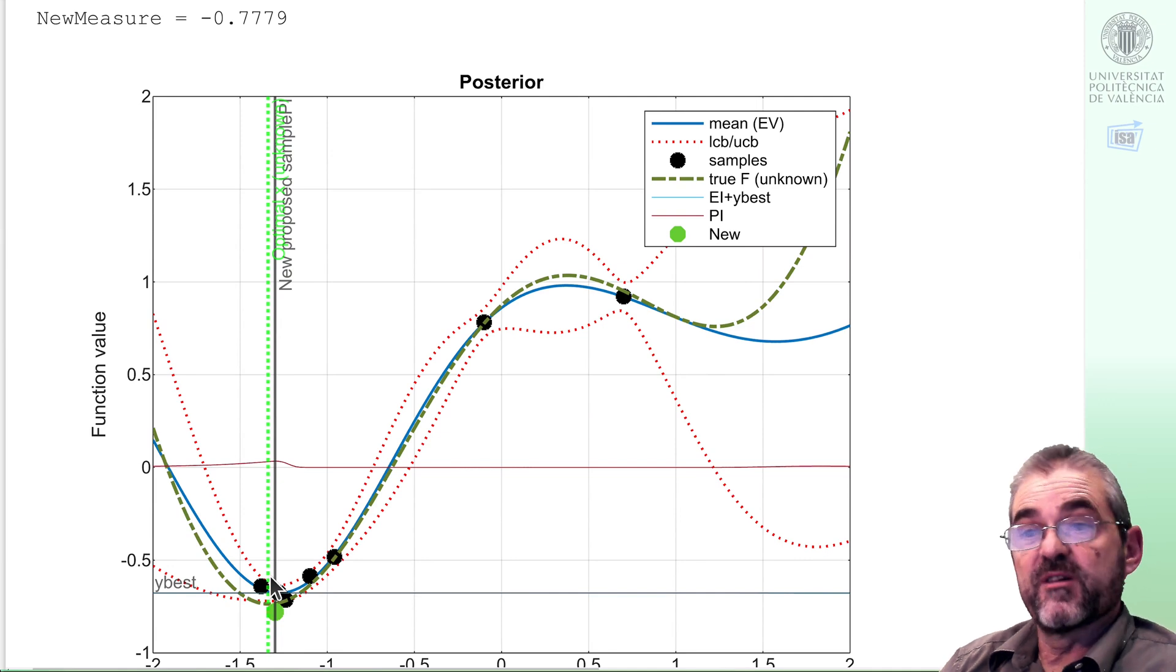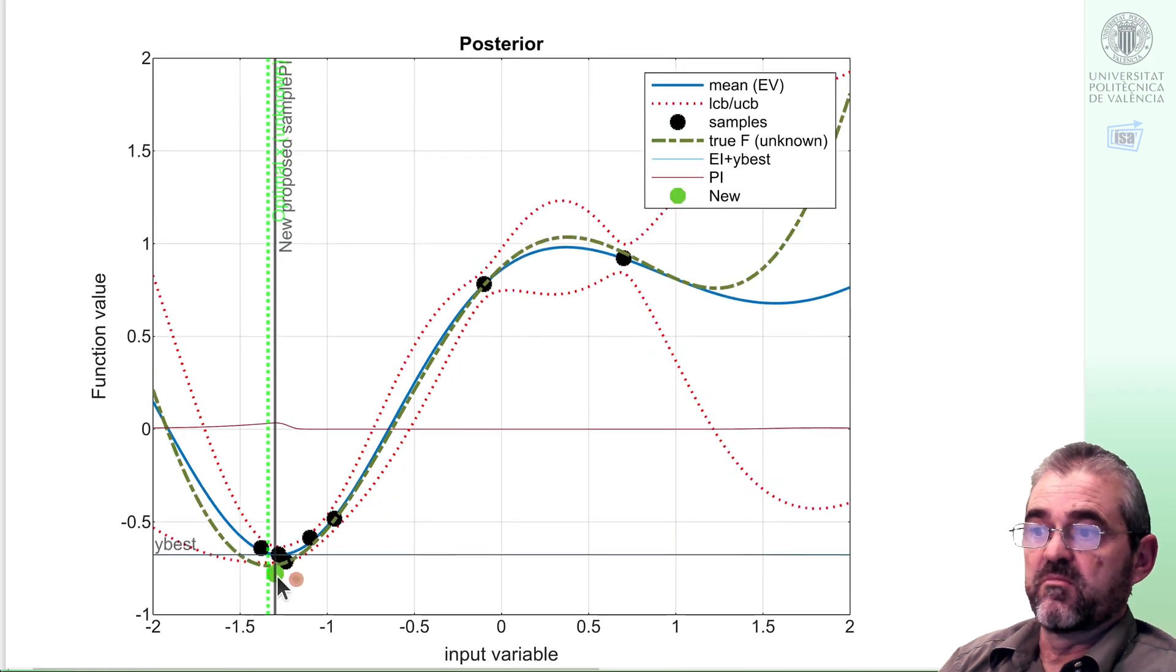And as prior and posterior do agree, the blue curve sort of interpolates close to the optimum, reasonably close to the true green curve, and so my Bayesian optimization loop ends here.